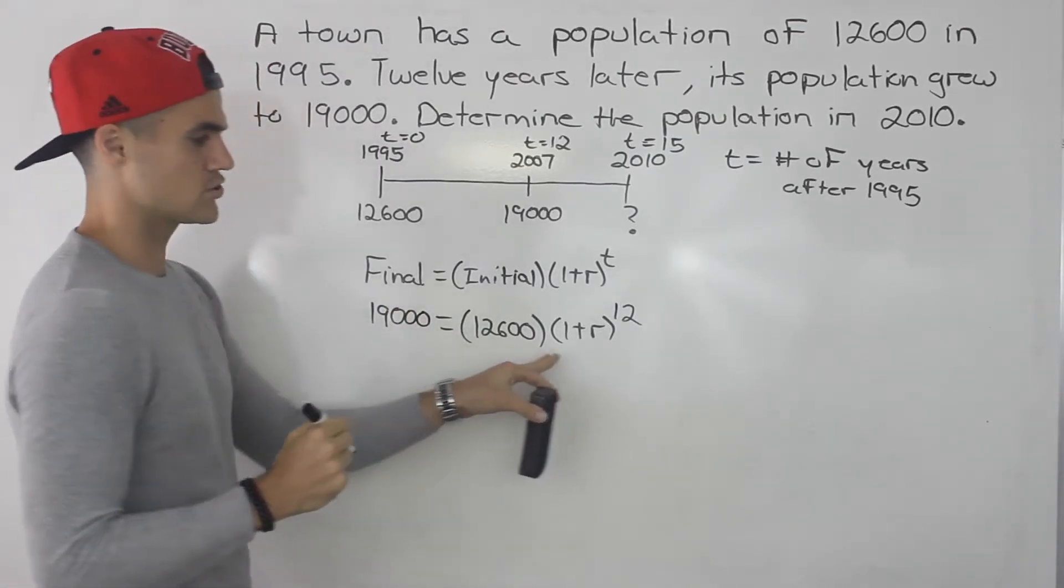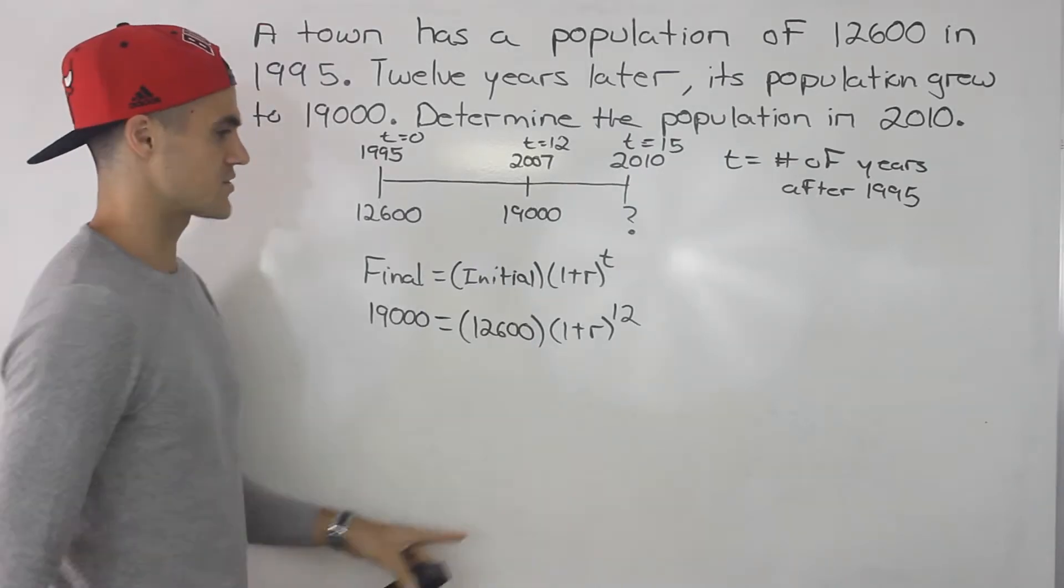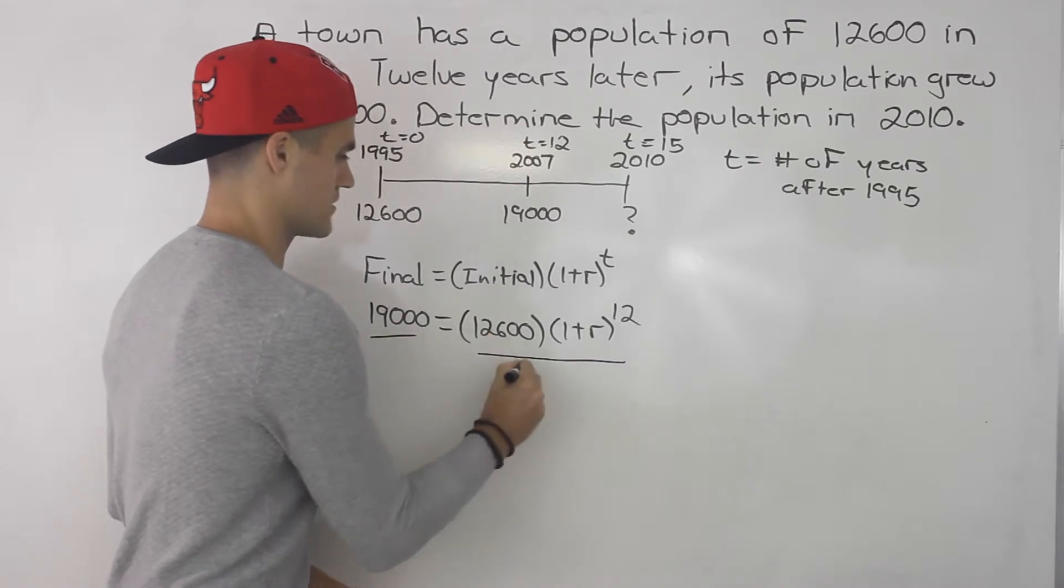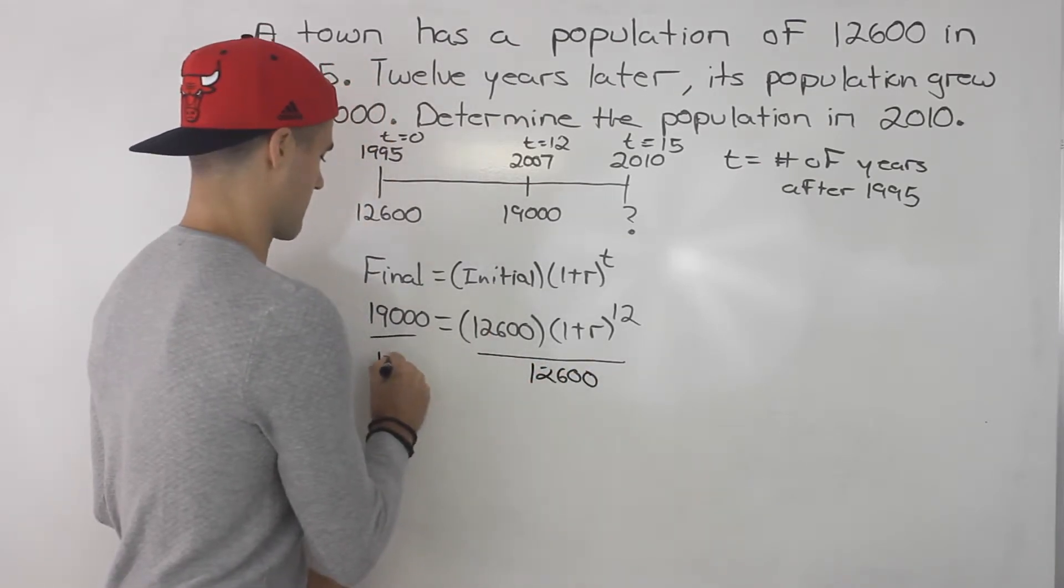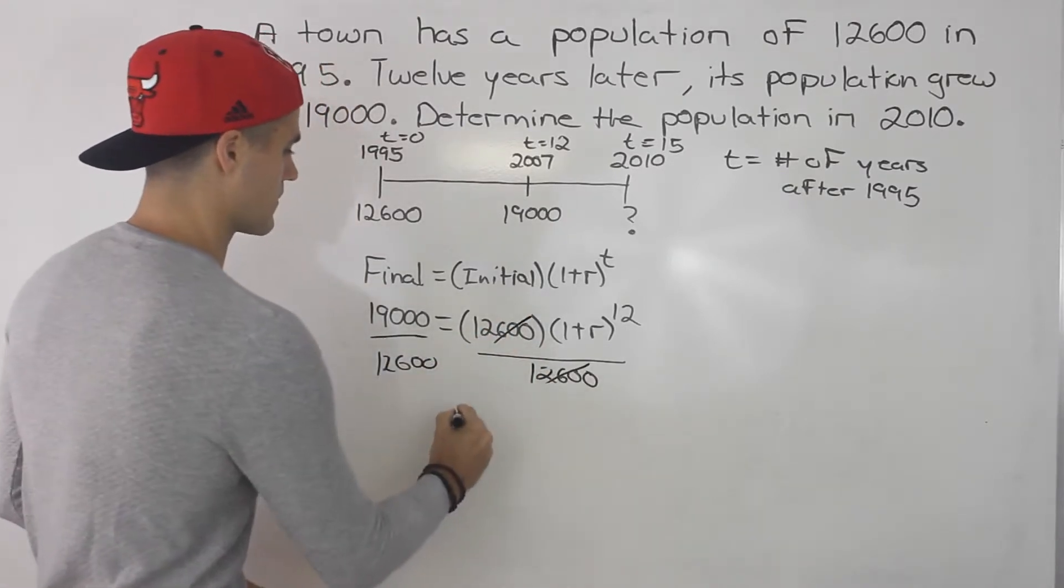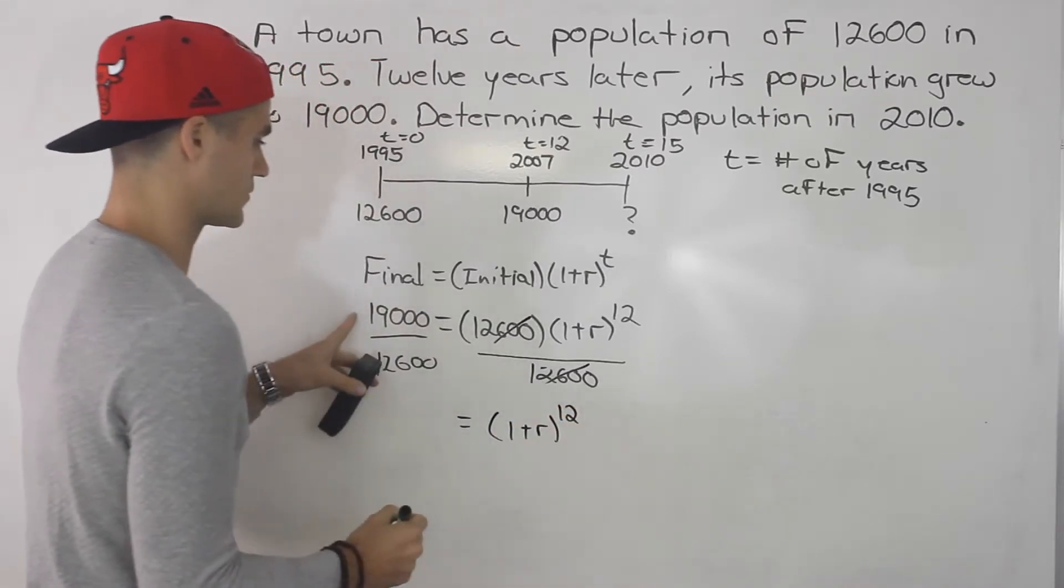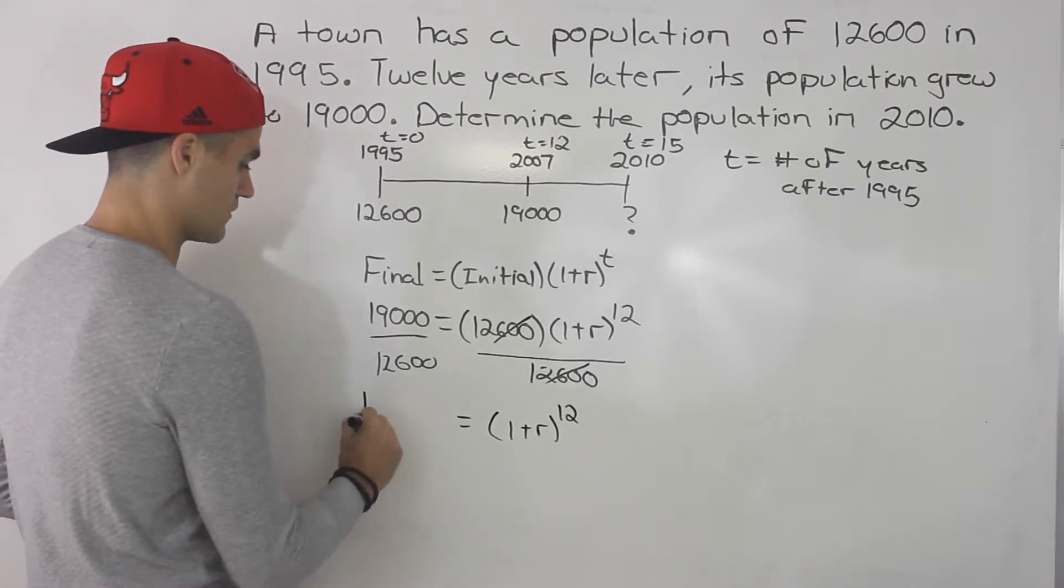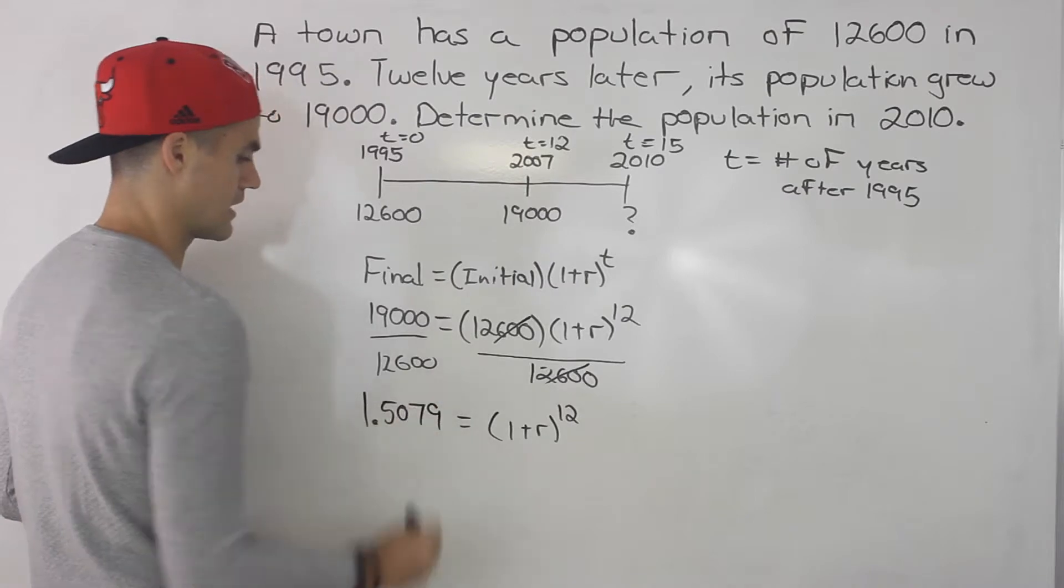So here we have an equation and we can solve for r. That's the only variable that's remaining. So the way we're going to isolate for this r here is we're going to divide both sides by this 12,600, because it's going to get rid of it right there. So then we'll have (1 plus r) to the power of 12 equals 19,000 divided by 12,600, which would give us 1.5079.